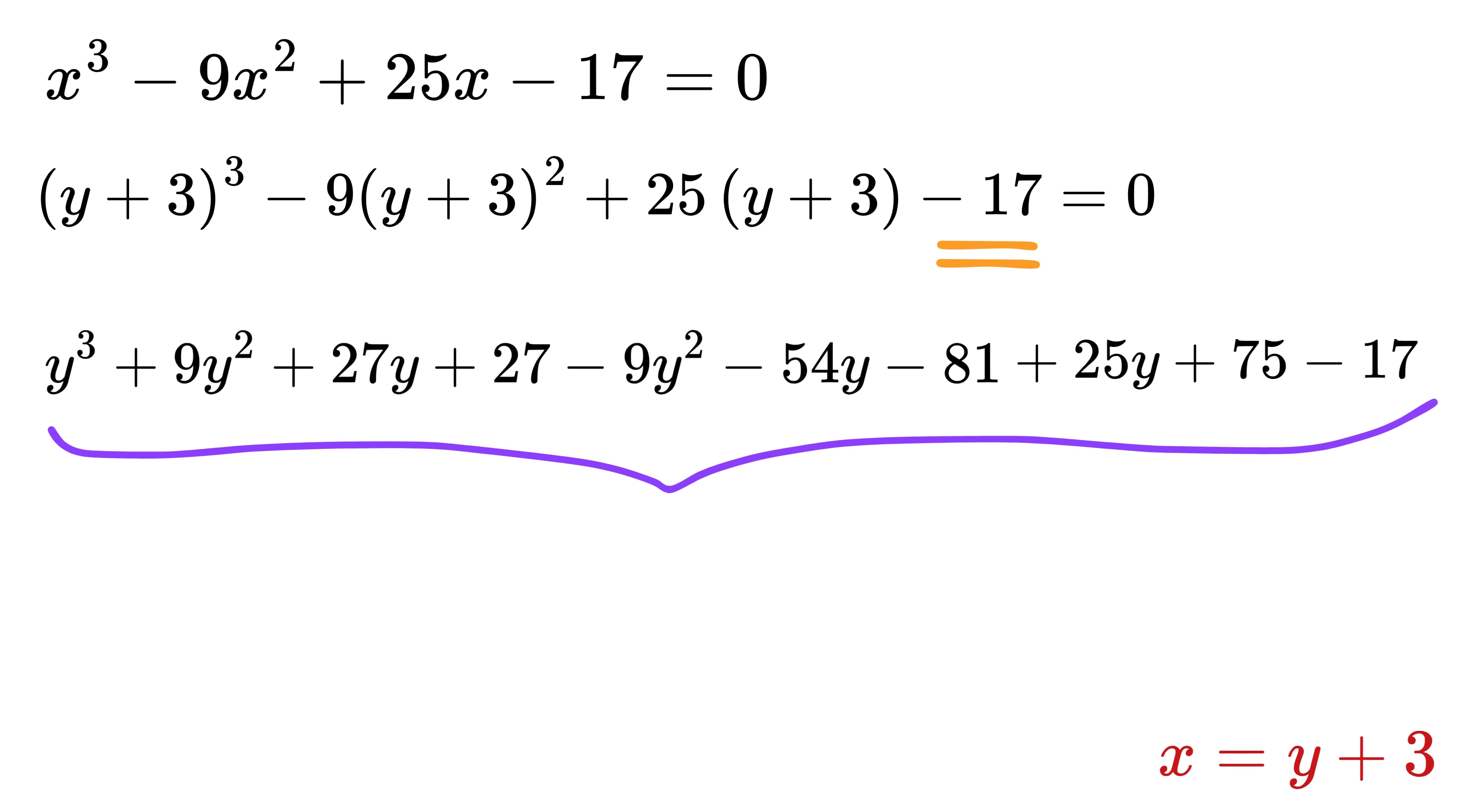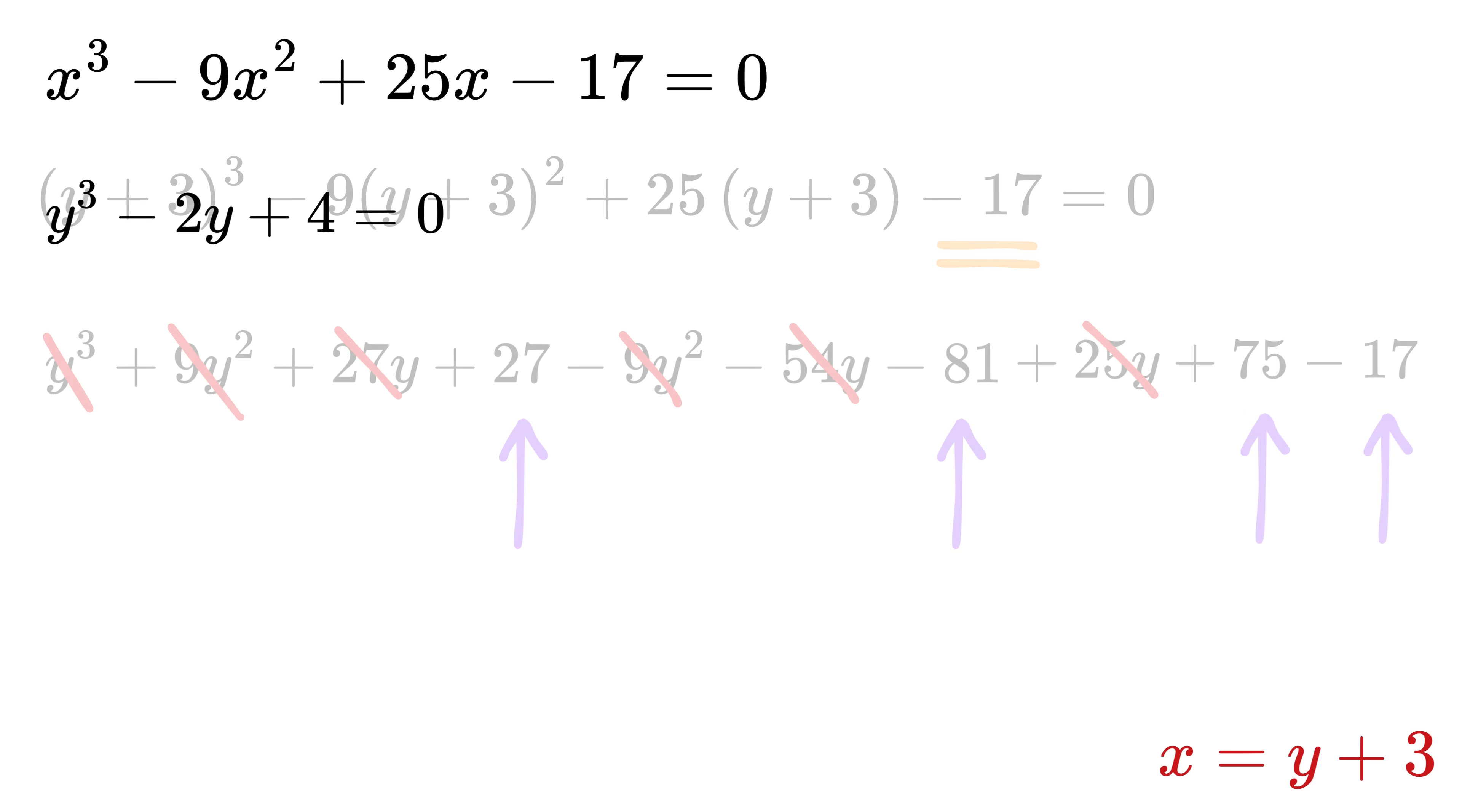Now let's put all these together. We will combine the like terms. The y³ stays as it is. The 9y² and -9y² cancel each other out completely. For the y terms, 27y - 54y gives -27y, and -27y + 25y becomes -2y. Now for the constants, 27 - 81 is -54, -54 + 75 is 21, and 21 - 17 gives us 4. So finally our simplified equation becomes y³ - 2y + 4 = 0.